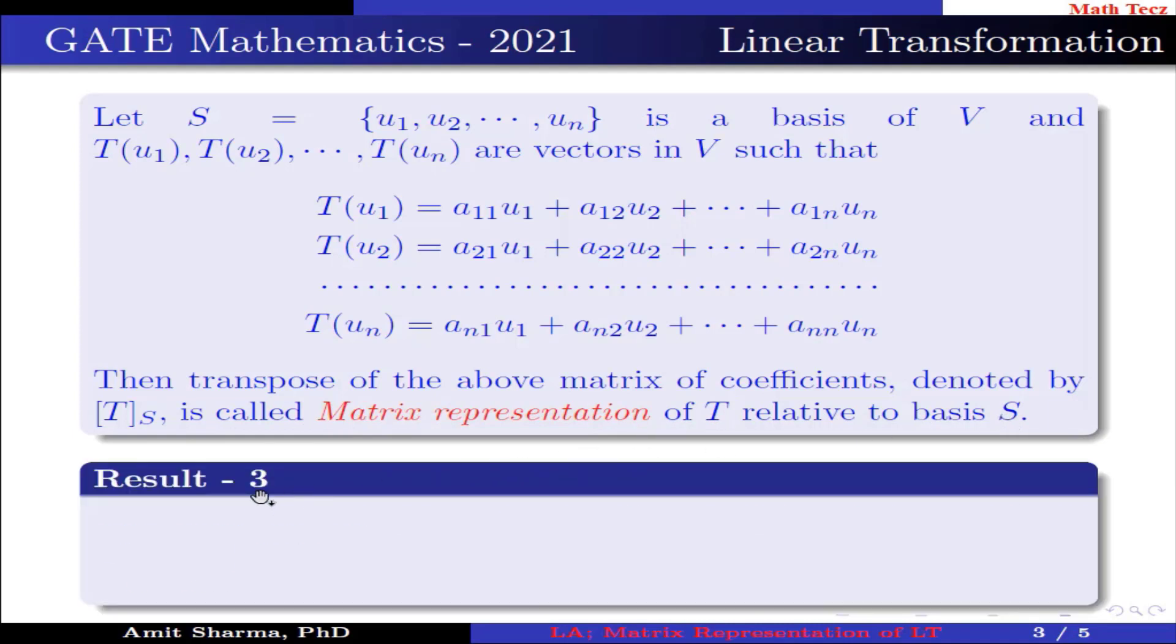Result number 3: The sum of all eigenvalues of a matrix A is equal to its trace. Now trace is sum of diagonal elements of the matrix.